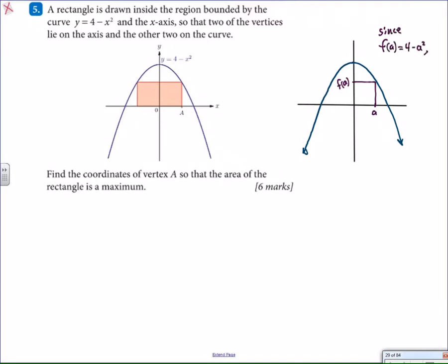In other words, we can find the coordinates of this point because if x happens to be the number A, then the y value will be 4 minus x squared. In this case, 4 minus A squared. So the coordinates at this point are A, 4 minus A squared.